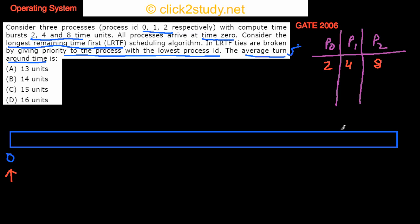At time 0, all processes arrive. The process with the longest remaining time is P2 with 8 units, so the CPU is given to P2. P2 runs on the CPU and as time passes, its remaining time decreases.